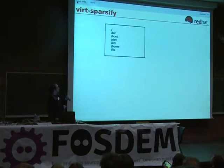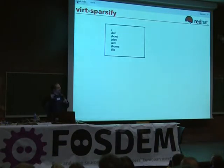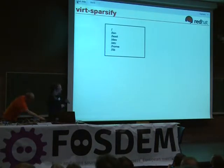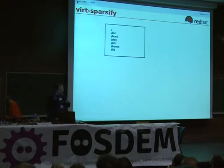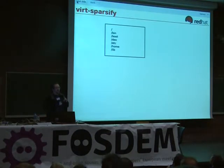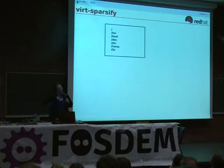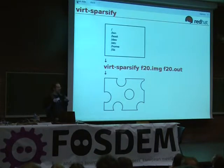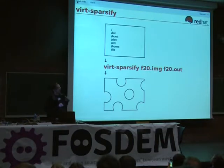VirtSparsify is the next step. When you've installed a guest, VirtSparsify can go in and actually make that guest disk image sparse — or thin provisioned, as some people call it. Using LibGuestfs again, it looks deep inside the file system and can find unused space in things like deleted files, unused swap, deleted logical volumes, or partitions simply not used. It can find blocks which, although they're not zeros in the disk image, are actually not used, and it can give that space back by making the disk image sparse. It's very easy to use — just a simple command.